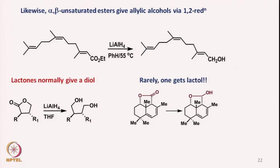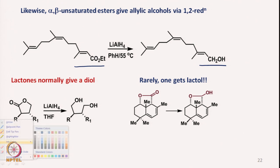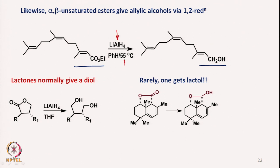Not only alpha-beta unsaturated ketones or aldehydes, but also alpha-beta unsaturated esters can be reduced to the corresponding allylic alcohols by reacting with lithium aluminum hydride. The reaction is done generally at high temperature — around 55 degrees — because esters are less electrophilic in nature relative to carbonyl compounds such as aldehydes or ketones.